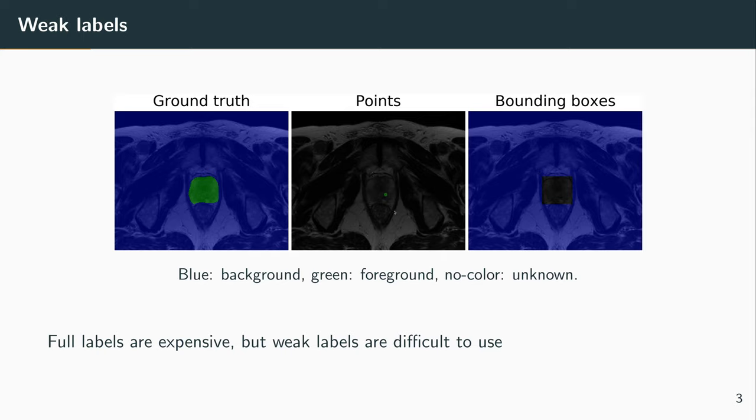In the case of a bounding box, it is the opposite. We know where the object is not. So for all that blue part, we know this is background. But inside the bounding box, we don't know which pixels belong to the object. Some of them will be object pixels, some of them will be background, but we don't know which one.